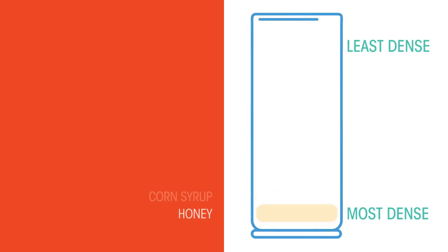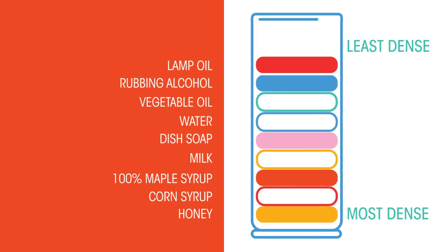Did you know that liquids and gases also have different densities? Look at this density tower of different liquids. The honey is most dense so sinks to the bottom, whereas milk is in the middle and lamp oil is the least dense.